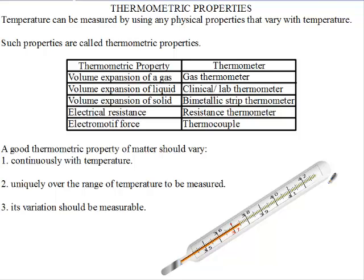Thirdly, the matter should have a variation that is measurable. The thermometric substance should be very sensitive, so that a slight change in temperature will produce an effect that will be visible.